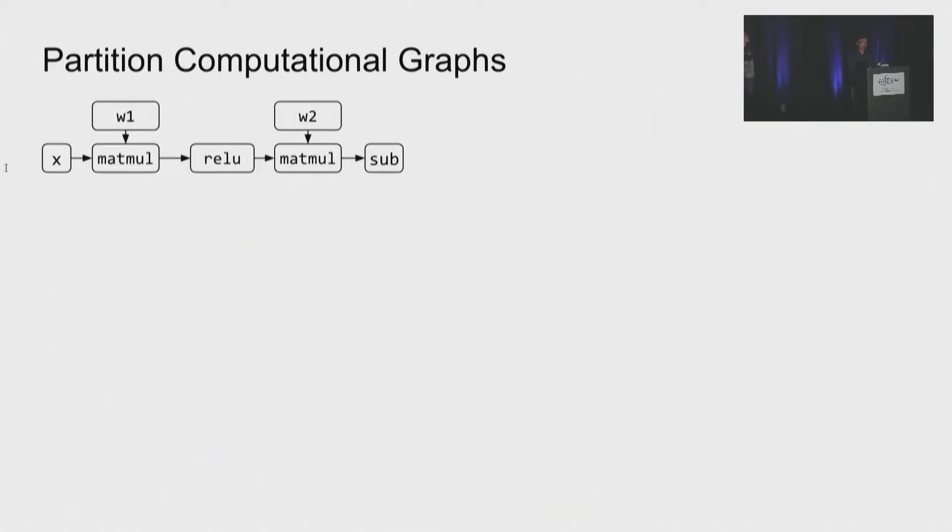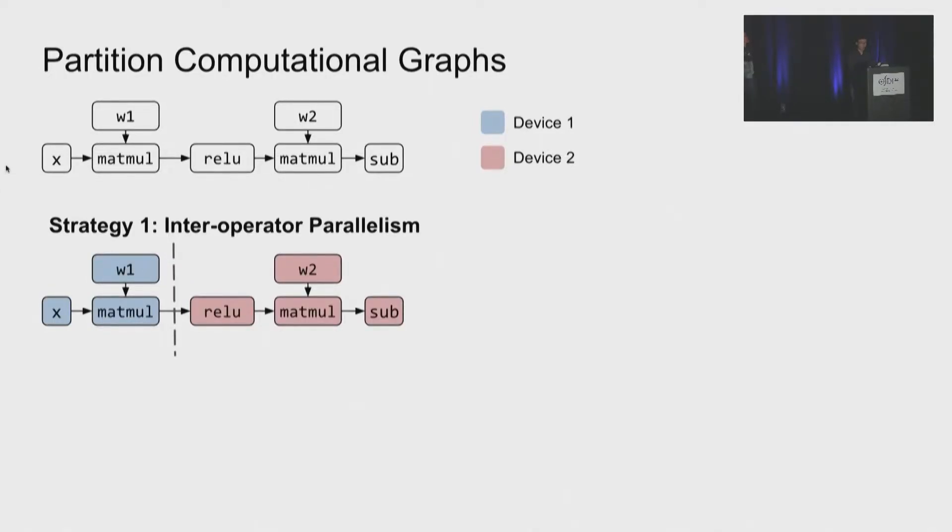So now let's take a look at computational graph and explain why it's hard. The graph begins with an input X, then we have a lot of matrix modifications and convolutions and some element-wise activations. This figure only shows the forward propagation of the graph. The real graph will be more complicated with backward propagation and gradient updates. So how can we partition this graph on two devices? The most straightforward way is to cut the graph in the middle and put them on two devices. This is called the inter-operator parallelism. This cut is actually not too bad because the communication across the cut is small.